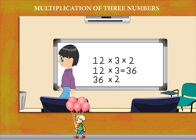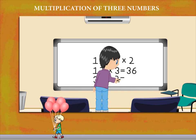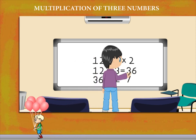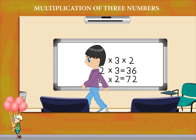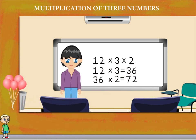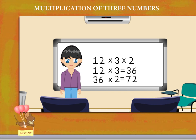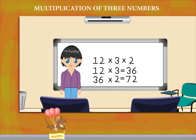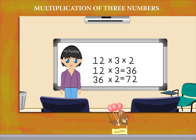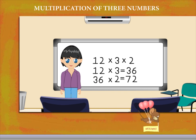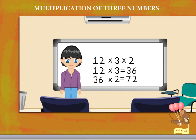72. So he multiplies the first two numbers and then multiplies the answer with the third number. Good going, Jimmy!